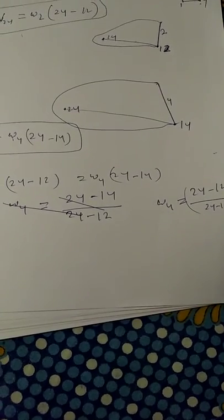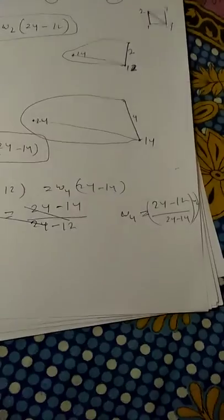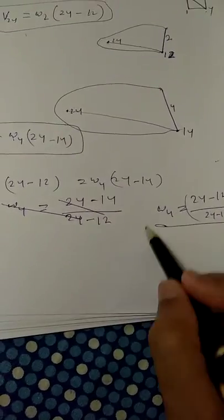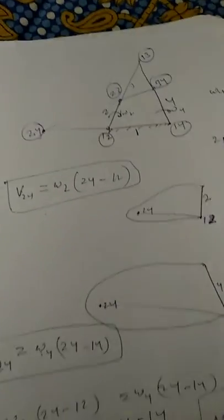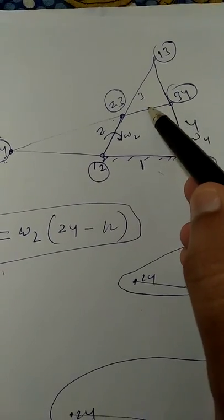Times omega 2. I can write it here, omega 2. So this is how you can find omega 4. Now in my next video I'm going to find the angular velocity of link 3.